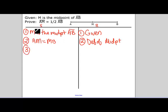And I'm trying to get AM to be half of AB. Well I know that AM plus MB equals our whole segment of AB. And our reasoning there is our segment addition postulate.